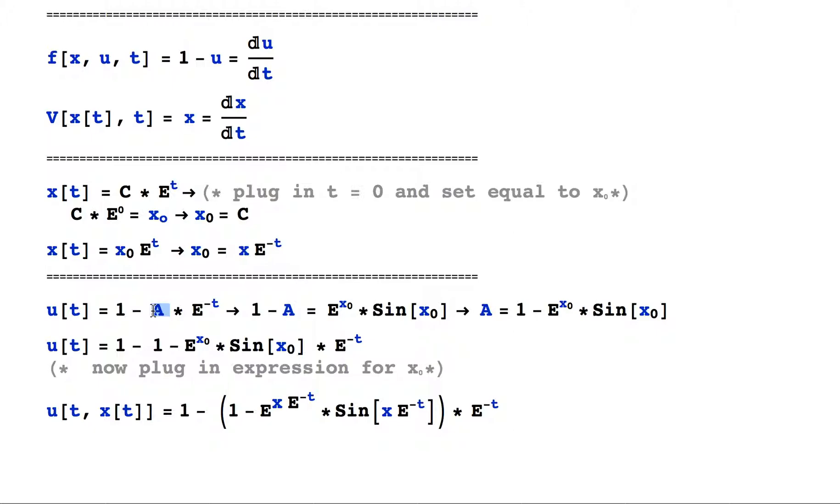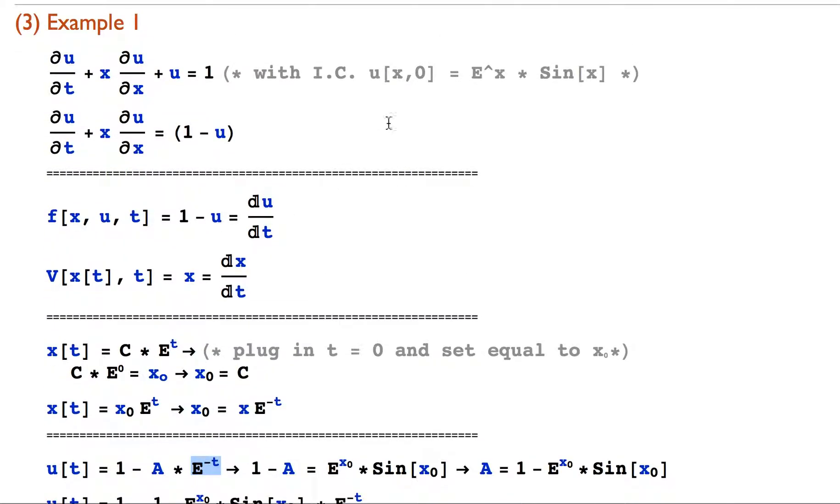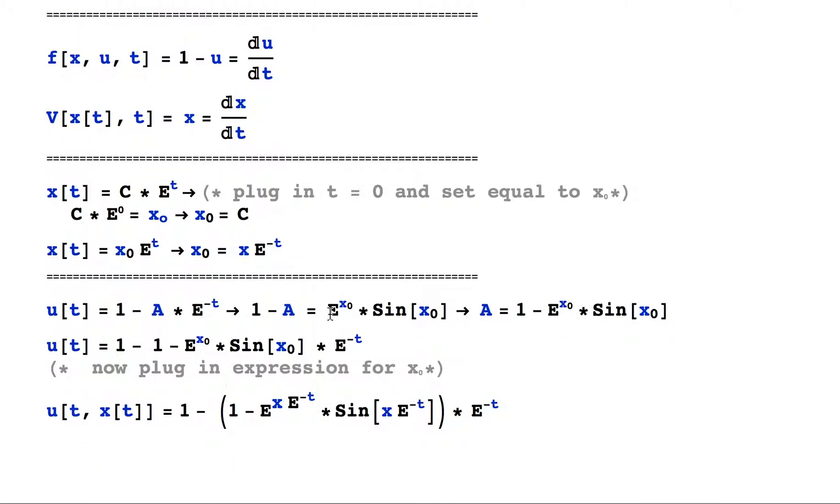So we're going to go ahead and plug in t equals zero. Obviously this e to the minus t is just one, so we have 1 minus A. Then we set that equal to our initial condition, which is that u of x, zero is equal to e to the x times the sine of x, and we plug in x_naught because we're going to be evaluating this at time equals zero. Now if we simply solve for A, we arrange pretty easily to see that it equals this.